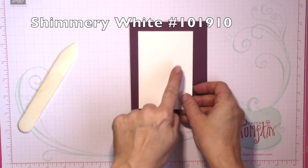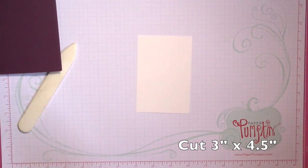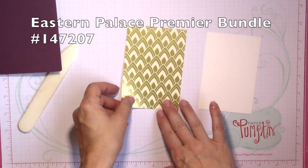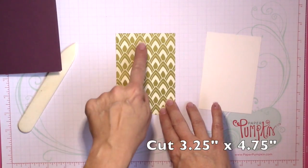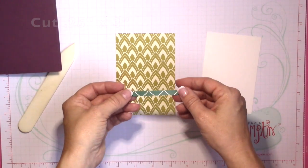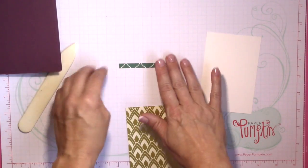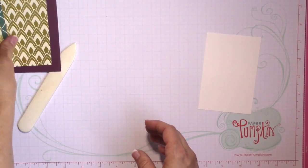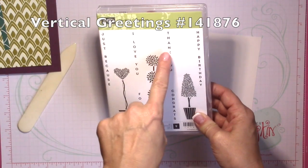And then I'm going to use a Shimmery White cardstock and that measures 3 by 4.5 and then I'm going to cut a piece of the Eastern Palace Designer Series Paper which comes in that bundle and that's a really pretty gold foil pattern. And that's just 3.25 by 4.75. And then I took some of the other Designer Series Paper. This is in Tranquil Tide and I just cut a sliver of that. That's just a quarter of an inch by 3 inches. And that's going to go on the Shimmery White cardstock here towards the end.